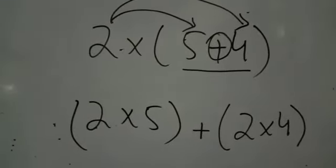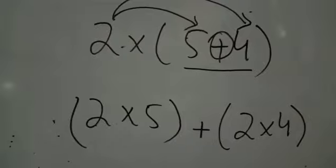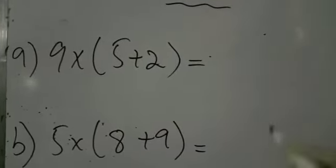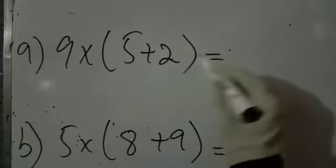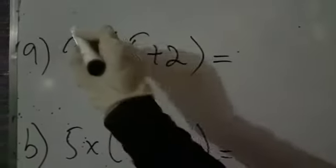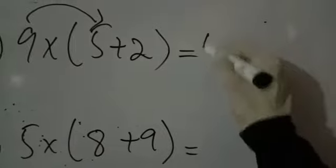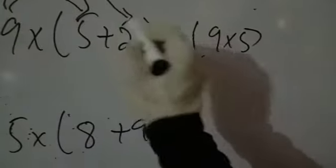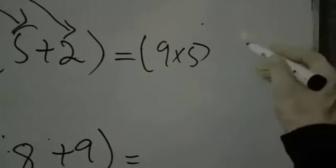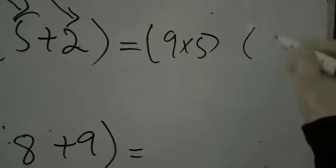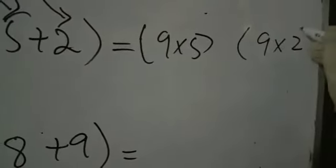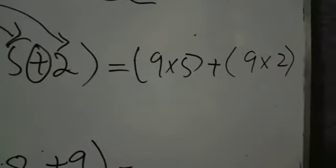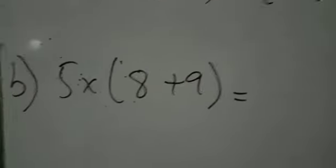Now I will tell you how you can write this. First example: you will multiply 9 into 5 and write here 9 into 5, then you multiply 9 with 2 and write here 9 into 2, with plus in the middle.